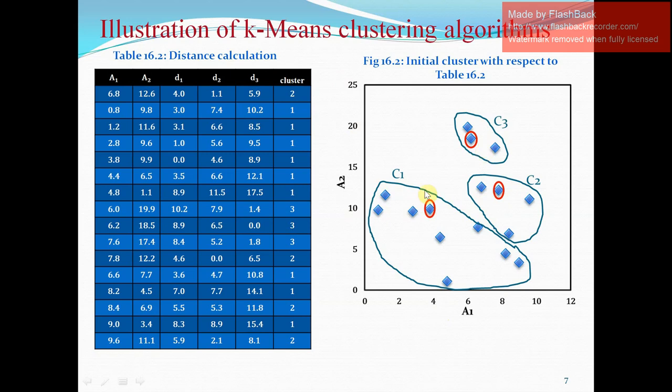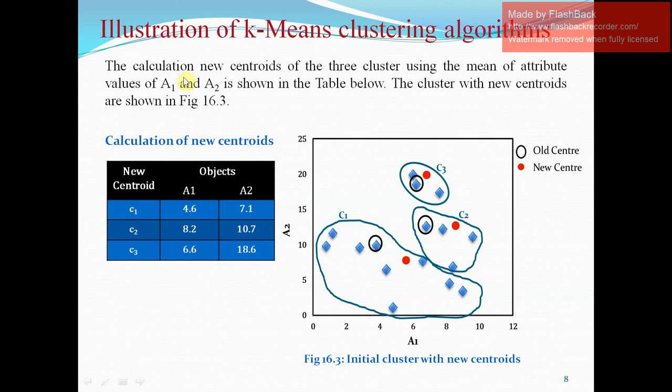In this initial cluster, figure 16.2 shows the cluster with centroid marked in red. The calculation of the new centroid of the three clusters using the mean of the attribute value of A1 and A2 is shown in the table view. Now the cluster with new centroid are shown. Now the values have been changed because of changing or shifting of the items from clusters from one cluster to another. Now C1 has been calculated and C2 has been calculated for A1 and A2. And old and new centers have been specified using black color and new center using red and R.